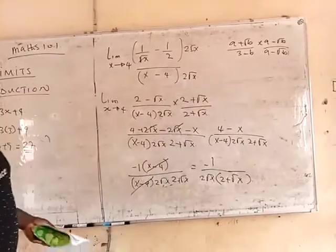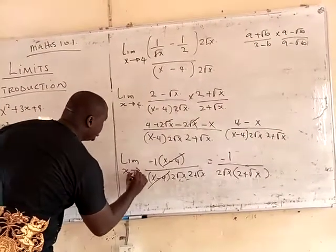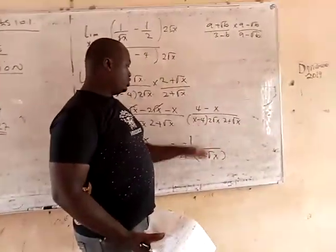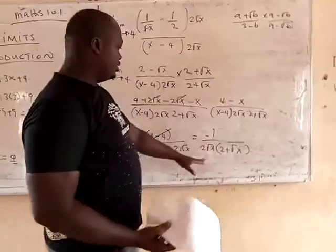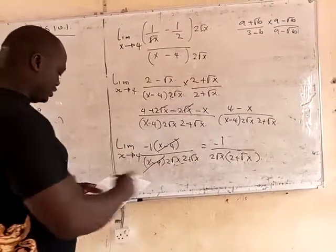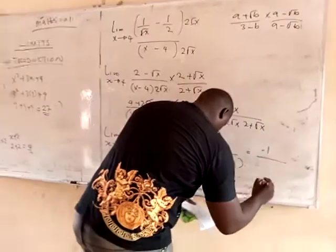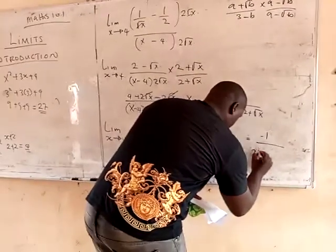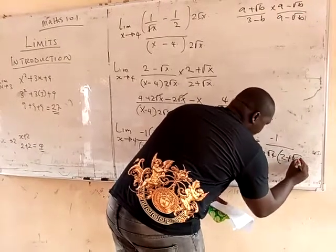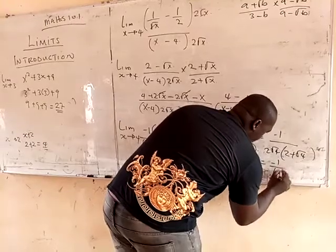Once you are here, remember we are still under limit of x equals 4. So all you have to do is substitute the value of x into this equation, and your answer will flow naturally. If you substitute the value, you will have minus 1 all over 2 root of 4, into bracket 2 plus root of 4. So your answer is going to be minus 1 all over 16.